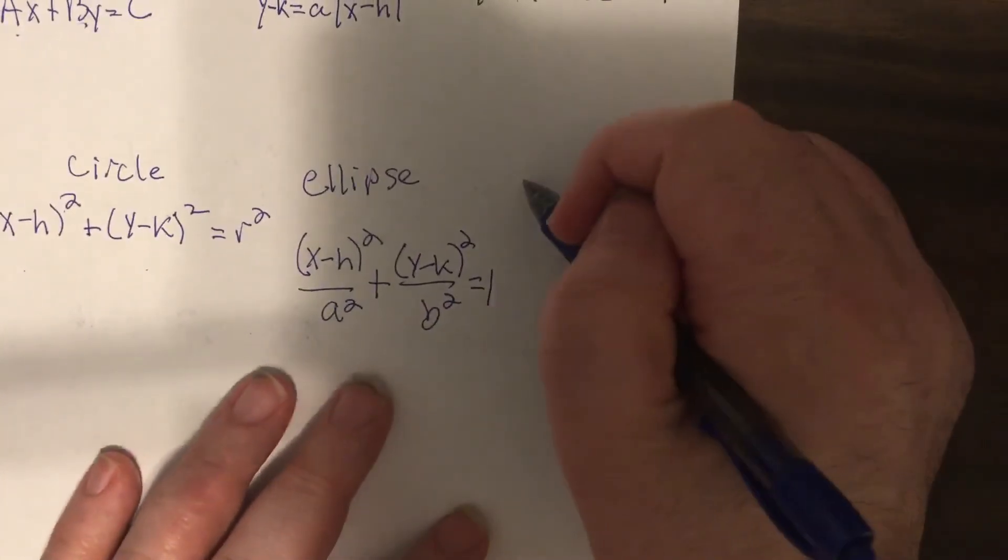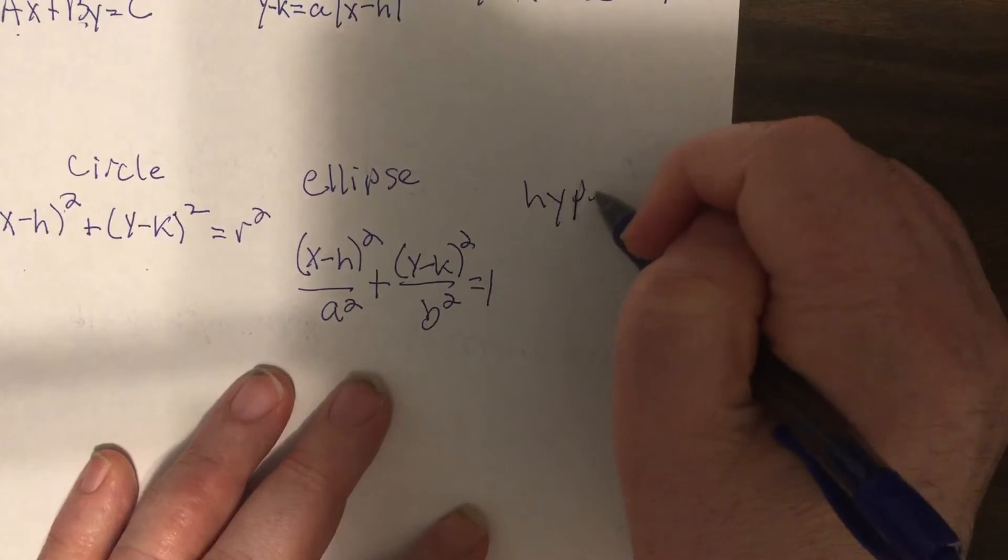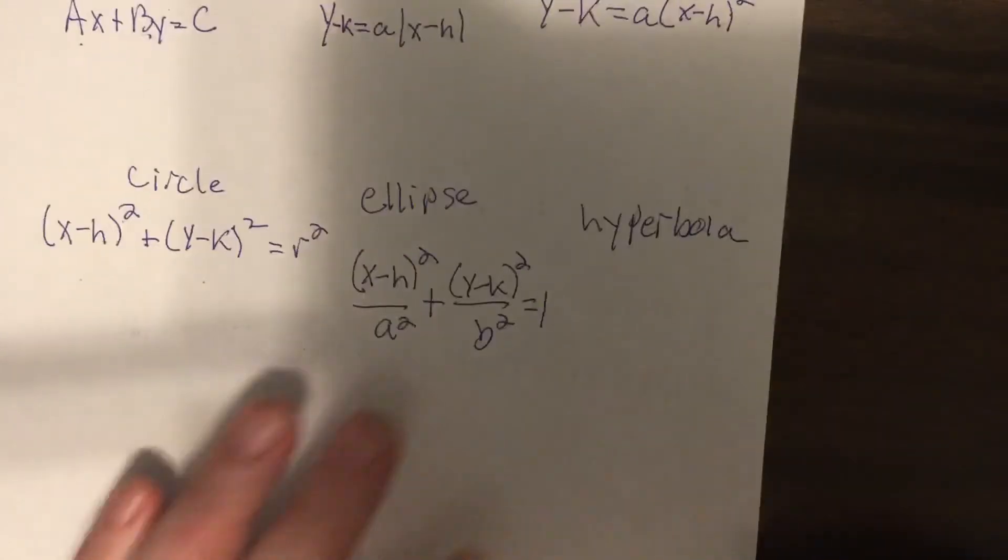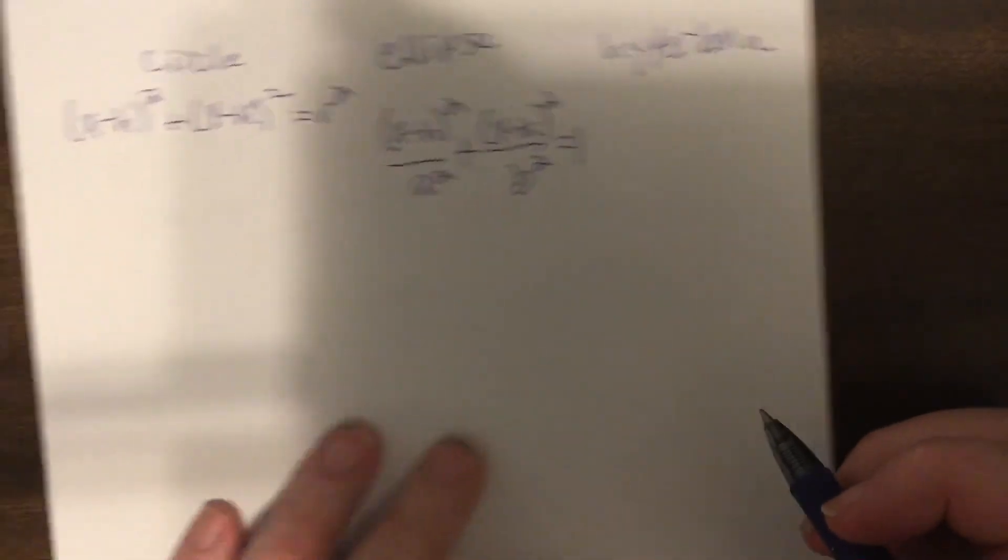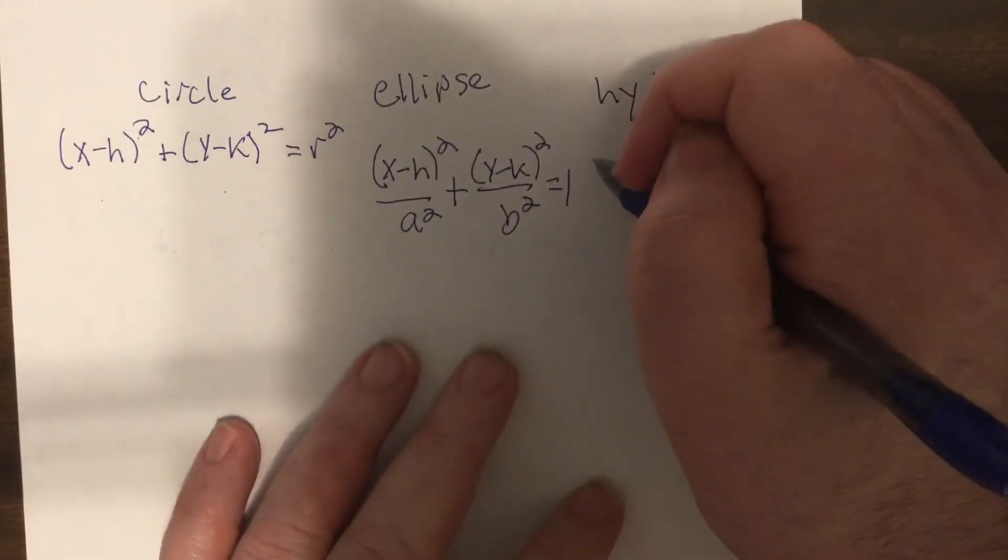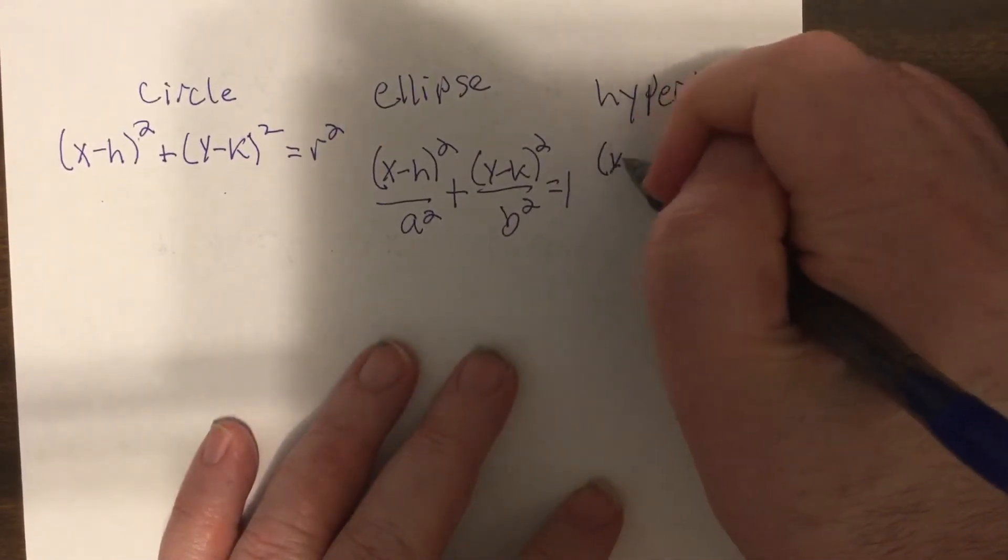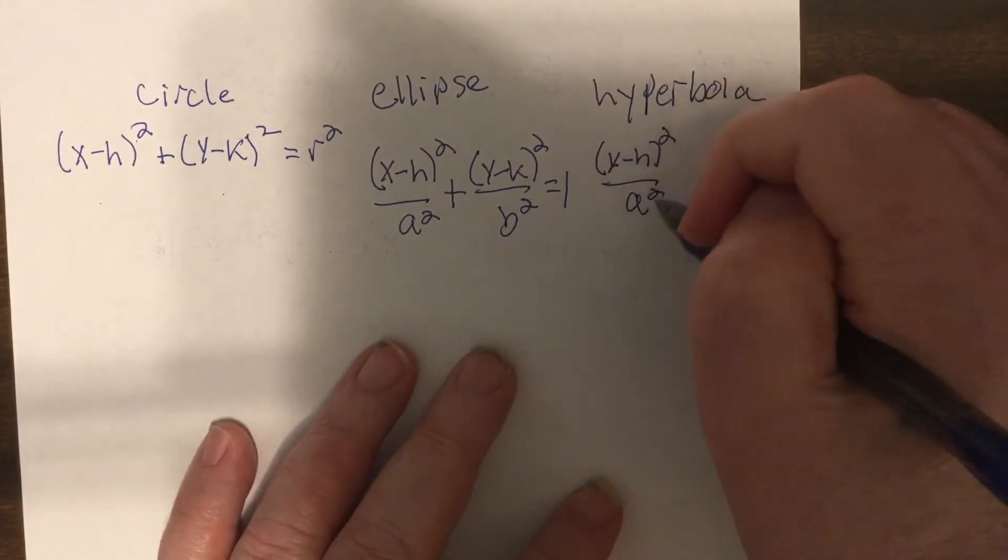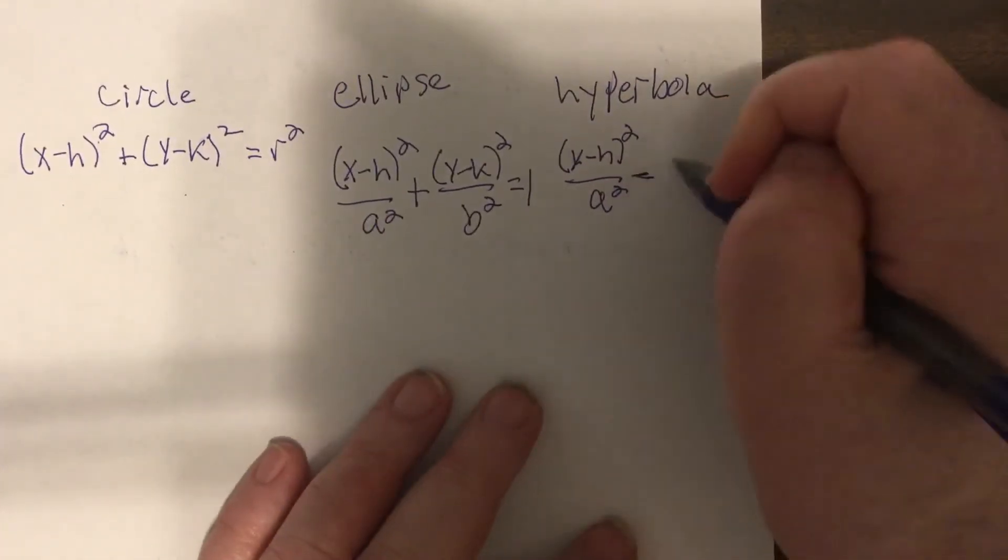But then the last one we did was hyperbola. And a hyperbola, when they're on the same side, you're subtracting them. And they're both squared. Bottoms can be the same or different, either way.